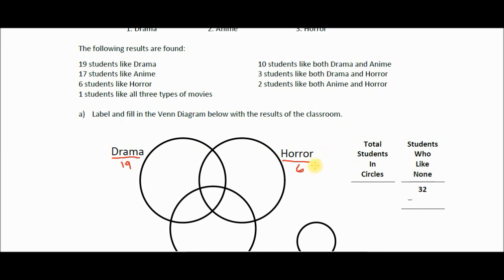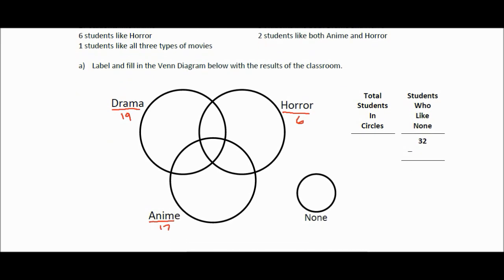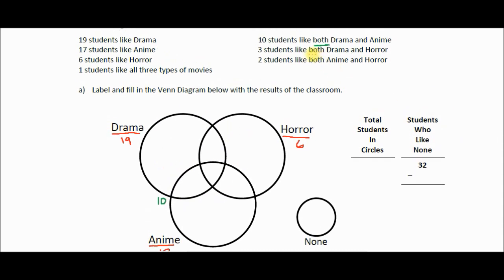Next step: write the number of all the combined categories between the two circles. We've got 10 students that like both drama and anime, so I'm going to put a 10 right there. This will not be part of our final answers, but it's going to help me calculate the answers inside the circles. Three students like both drama and horror, and two like both anime and horror.